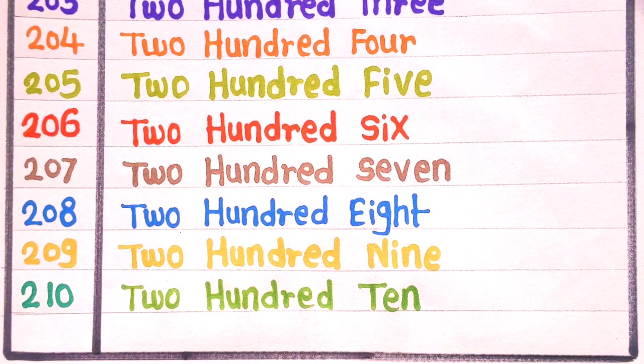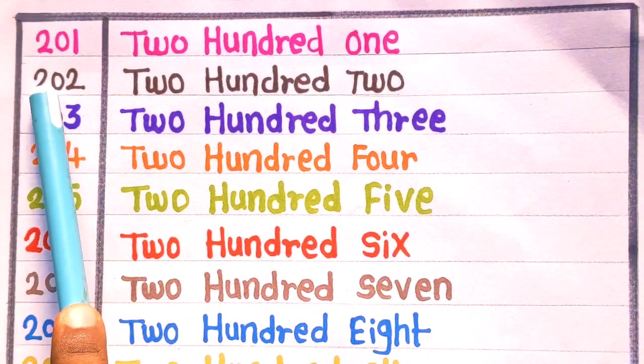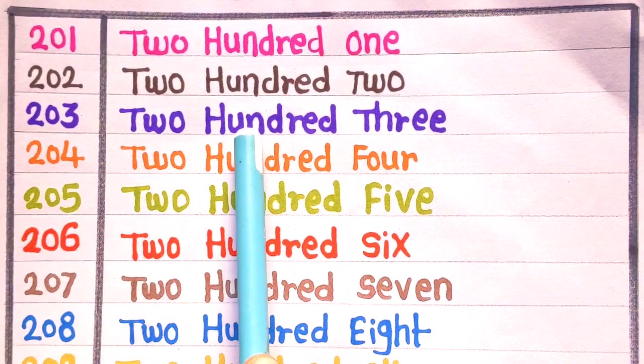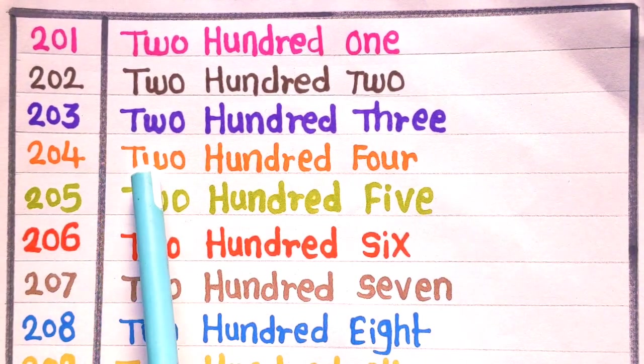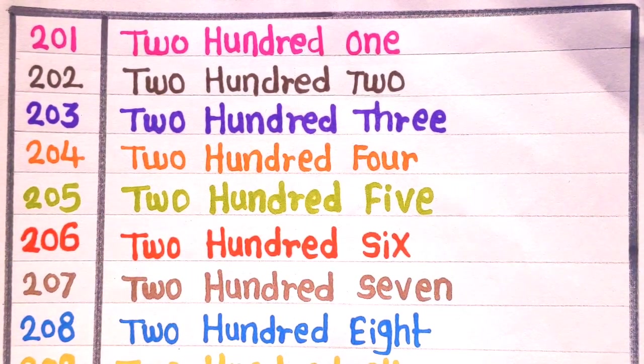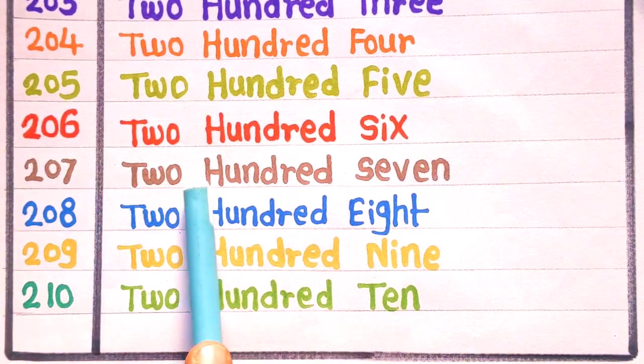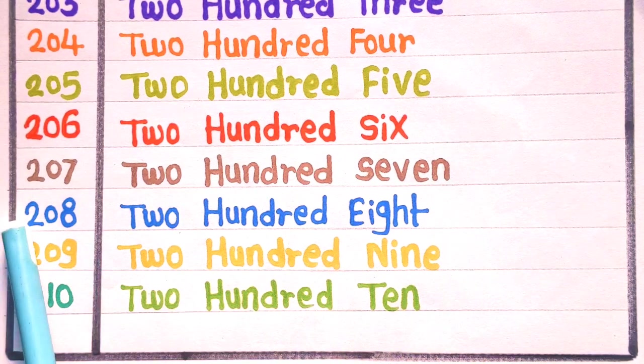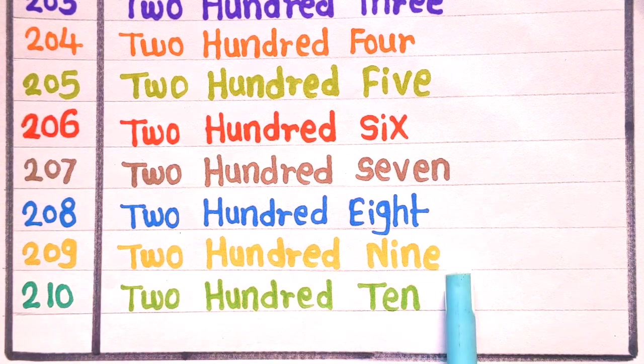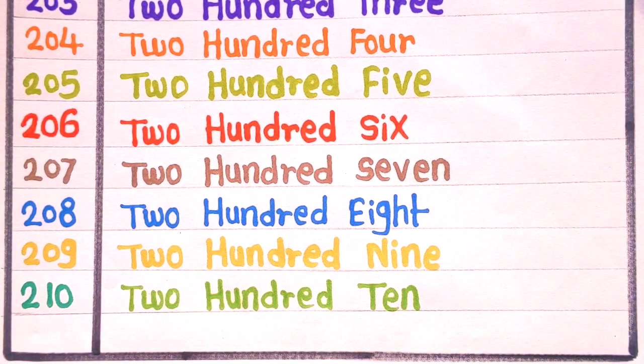Now, let's revise with me. 201 is 201. 202 is 202. 203 is 203. 204 is 204. 205 is 205. 206 is 206. 207 is 207. 208 is 208. 209 is 209. And 210 is 210.